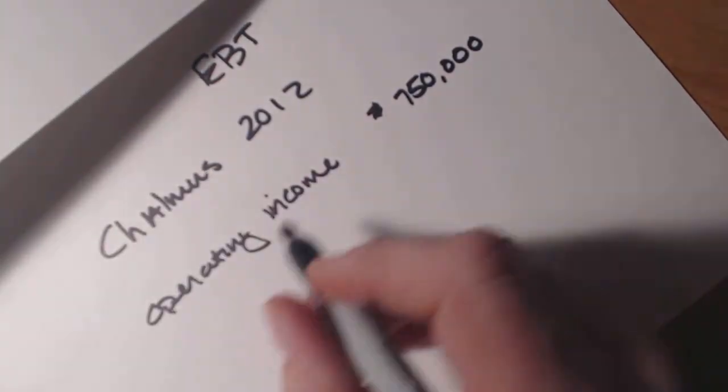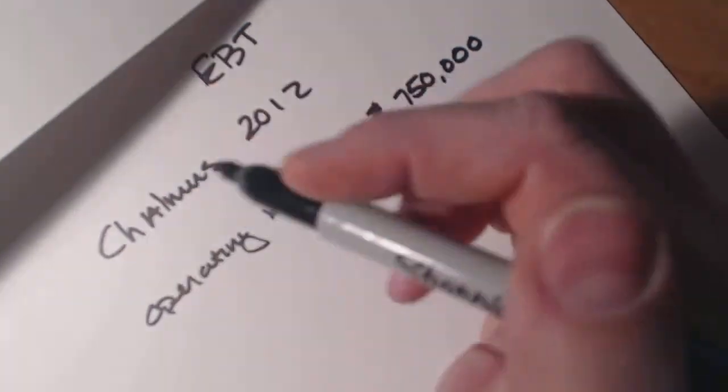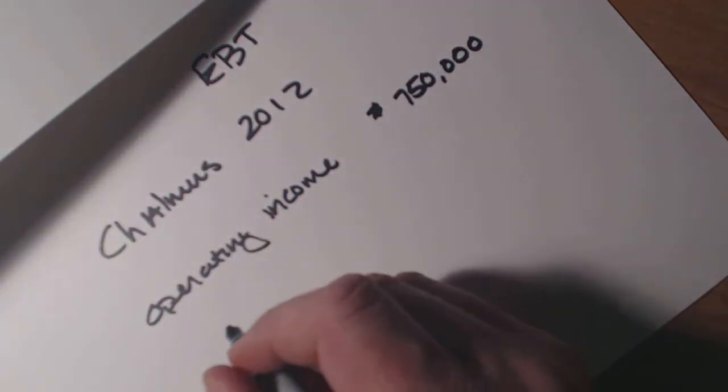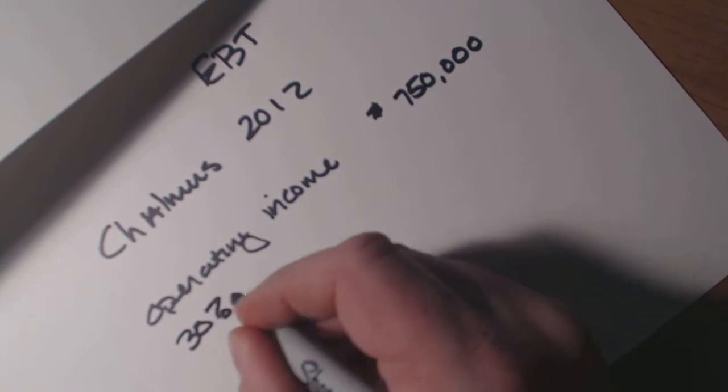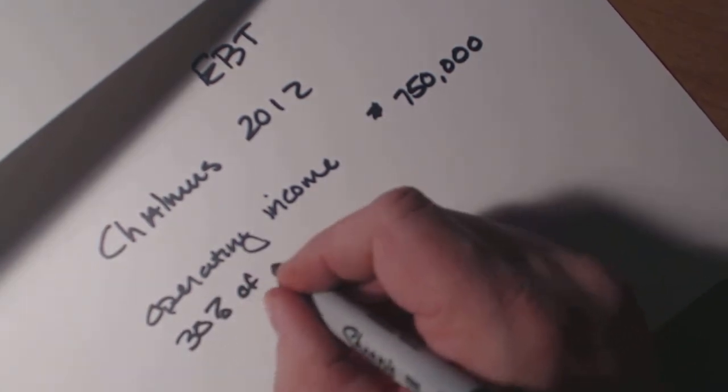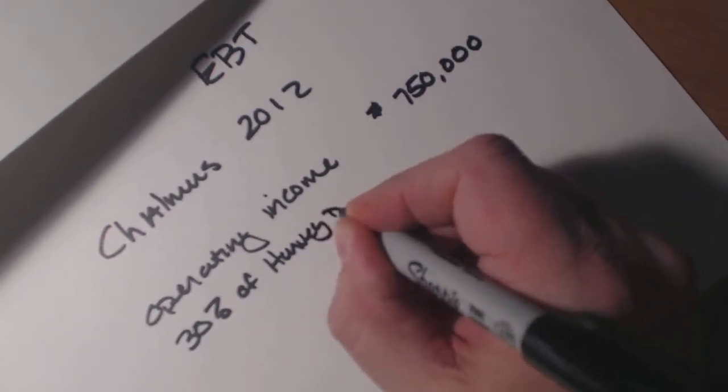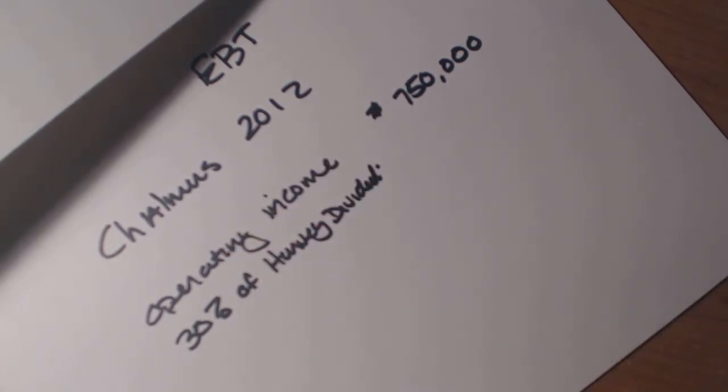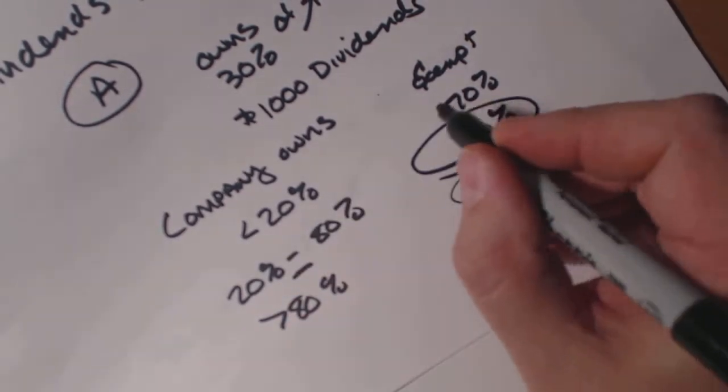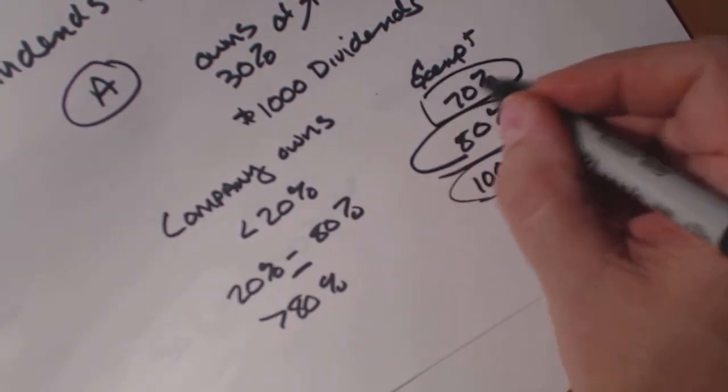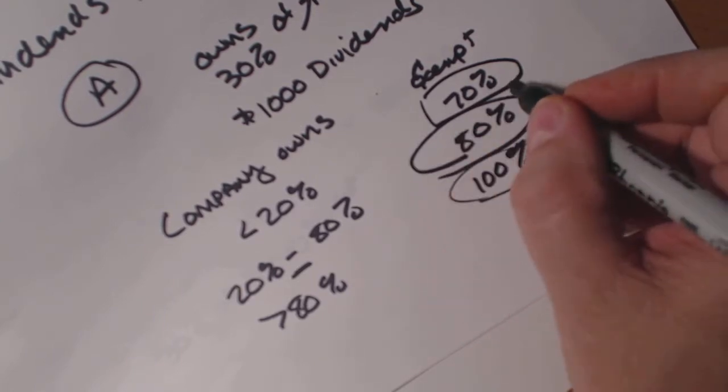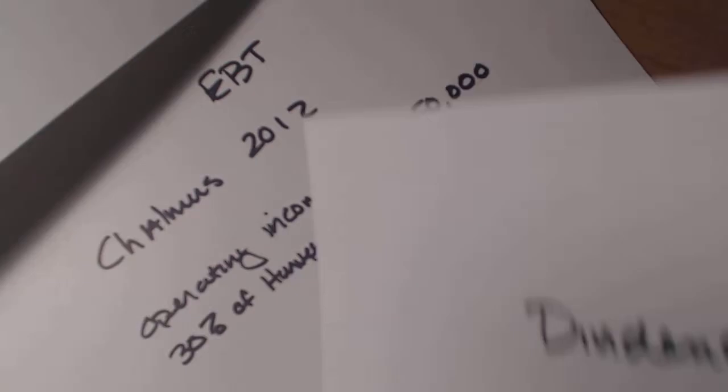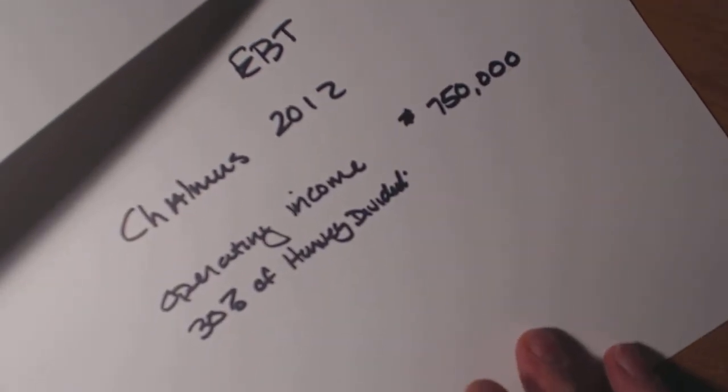So now, what do we have here? We have the dividends. So we're going to take 30% of the dividends, the Harvey dividends. Now, why do we do that? Well, if we look back at some of our charts, since they own less than 20%, only 30% of the dividends are taxable.